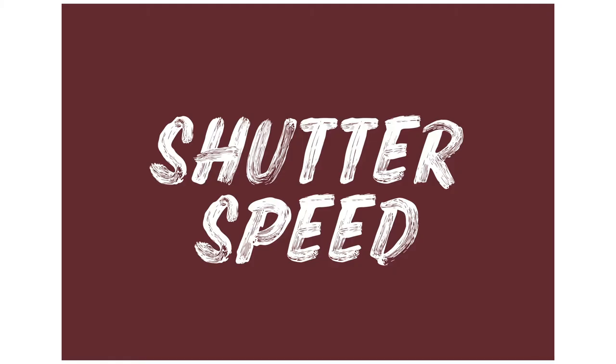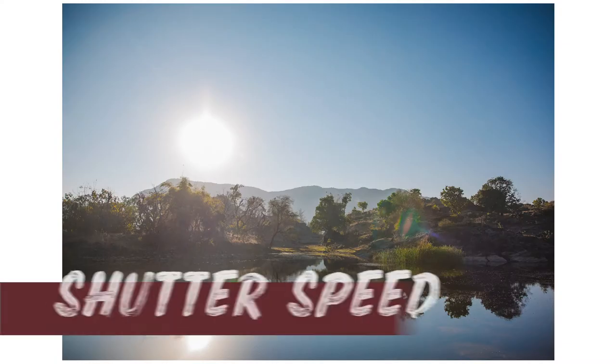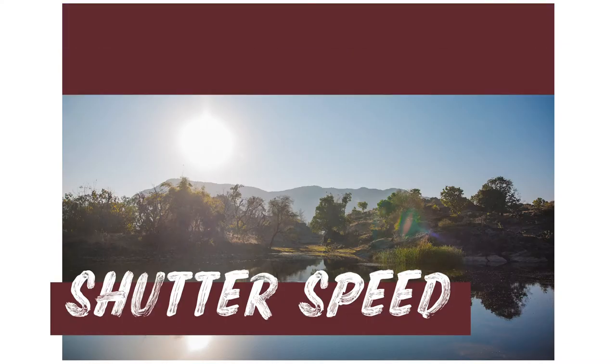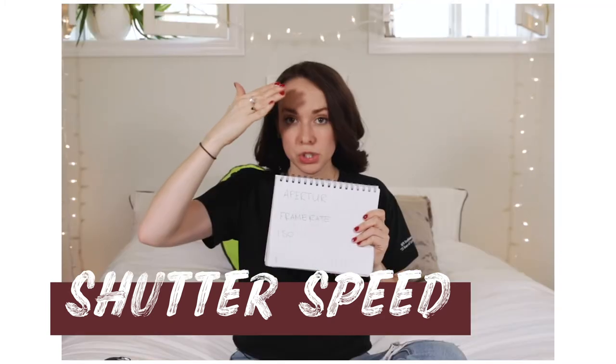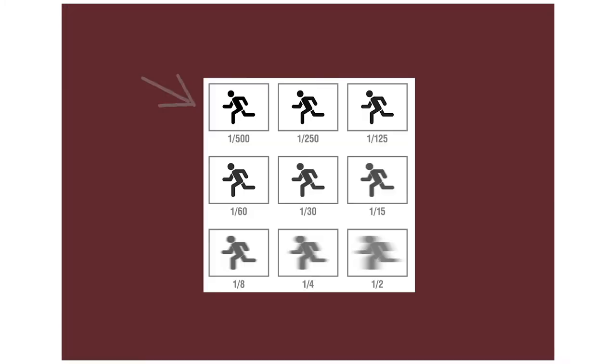The next one is shutter speed. If aperture is the eye, think of the shutter speed as blinking. Shutter speed is how fast your shutter in the camera is going to close and open in a second. In that second of it being up and down, the sensor is getting exposed via the light that's coming in, whatever light source you have. You can tell it to go really fast or much slower depending on how much time you need light to be hitting your sensor.